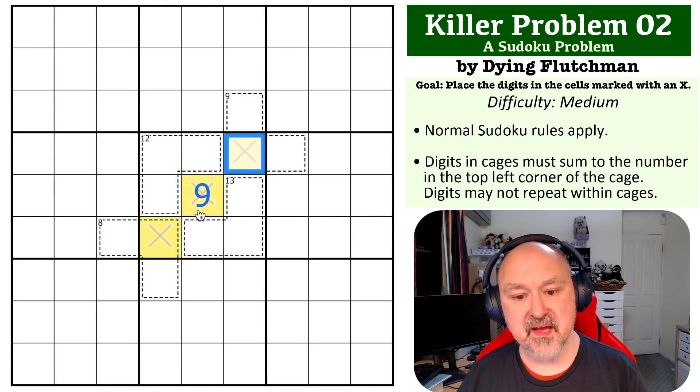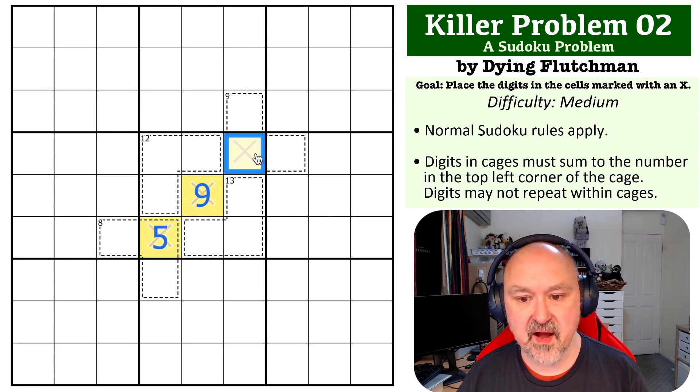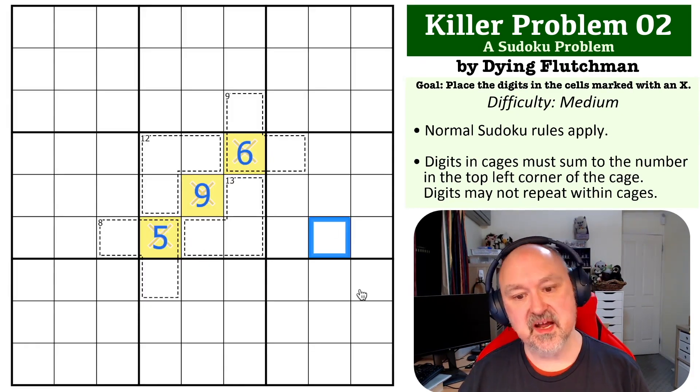And if they're any lower than their maximums, we won't get to 20. So we know that this has to be five, this has to be six, that gets us to our 20, and that is the solution of this Sudoku problem.